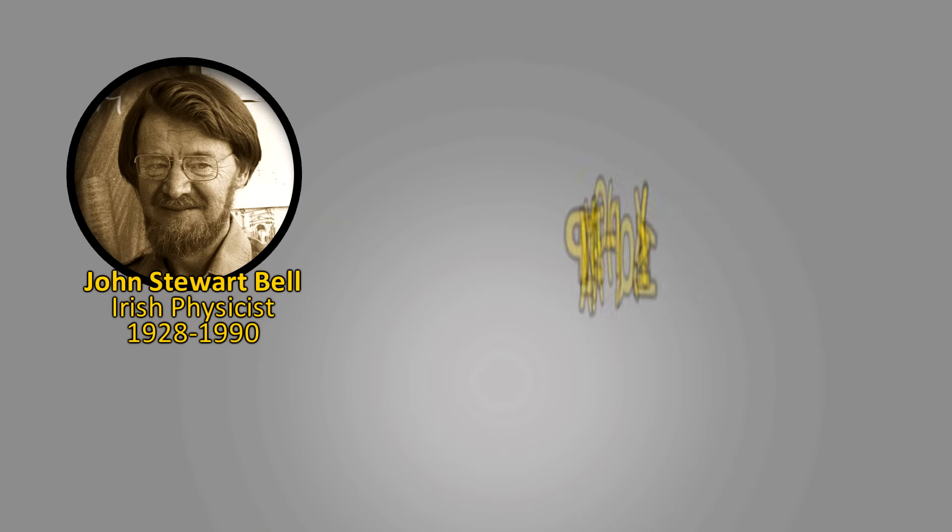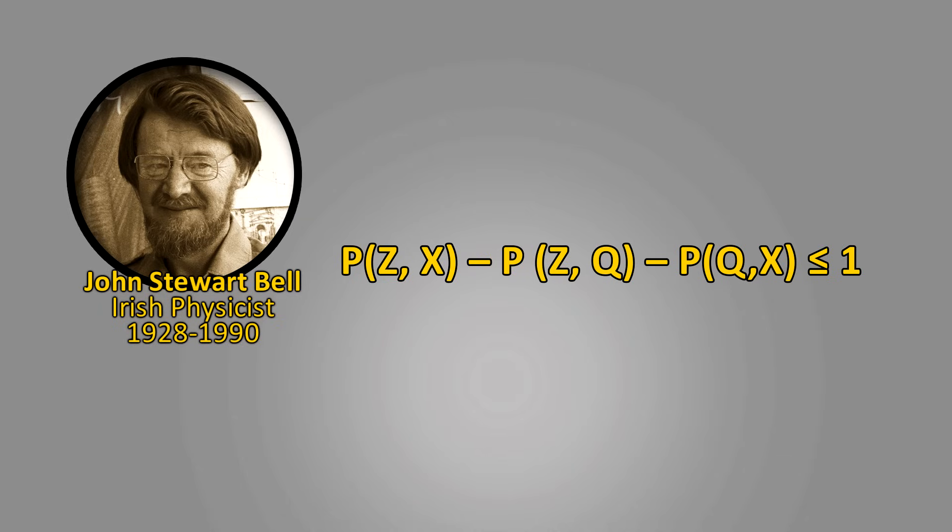This is where Irish physicist John Bell comes in. And in 1964, he proposed an experiment that could show whether the local hidden variable theory was correct or incorrect. Now Bell's equation is remarkably simple, but it's one of the most difficult to understand and simplify. So I'll present a highly simplified idea of how it works, then also show you the simplified version of the mathematical underpinnings later in this video.